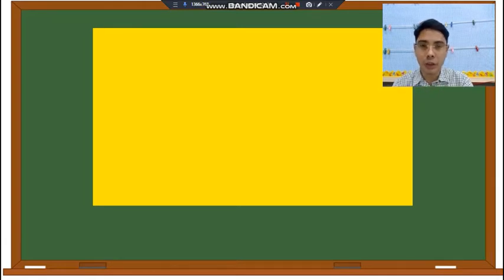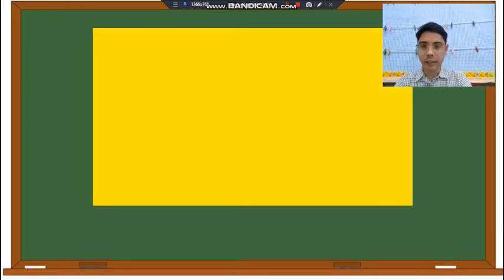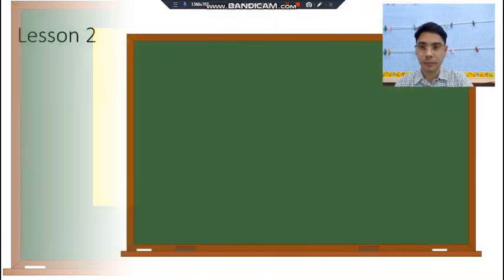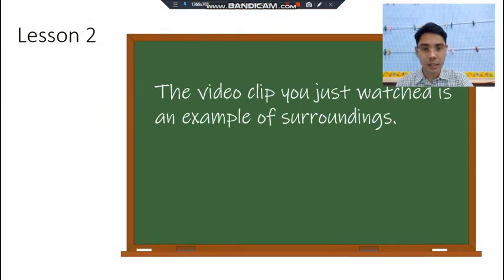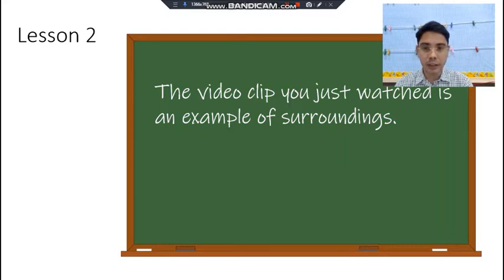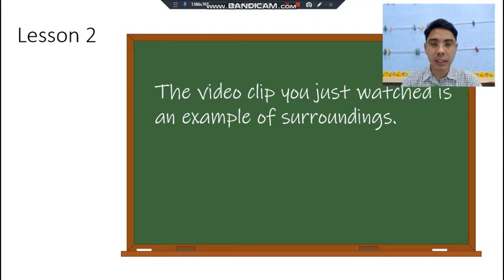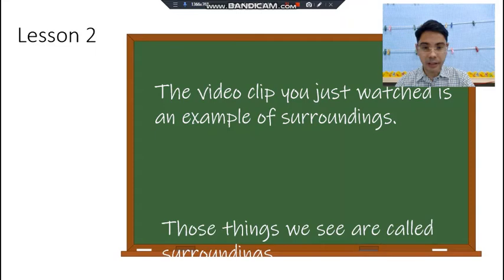Wow! Did you understand? Let's go further and talk about living things. Living things — something that moves, just like what the video told us earlier. Now, the video clip you just watched is an example of surroundings. Surroundings are objects or things that you see around you. It can be a living or non-living thing.